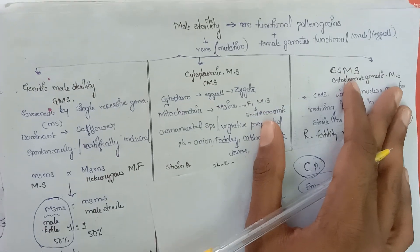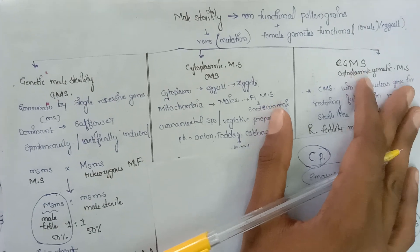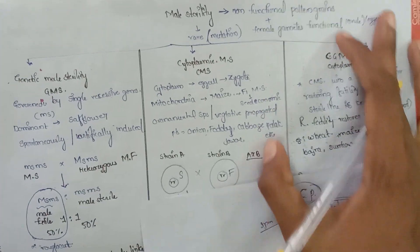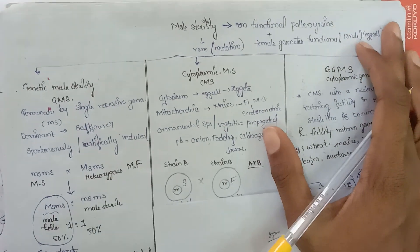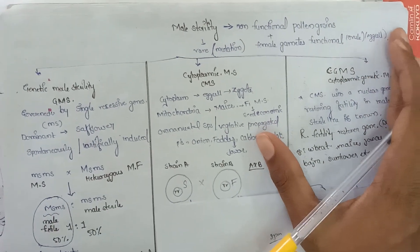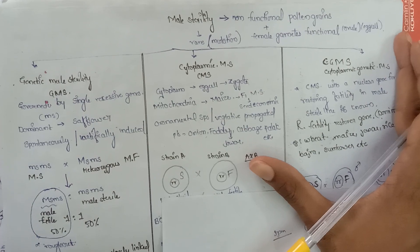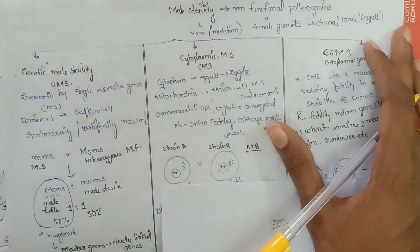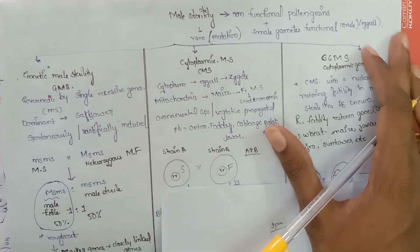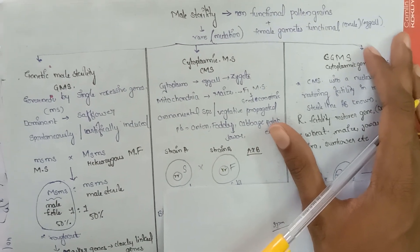Male sterility is of three types: Genetic Male Sterility, Cytoplasmic Male Sterility, and Cytoplasmic Genetic Male Sterility. Now let us know about each of these.